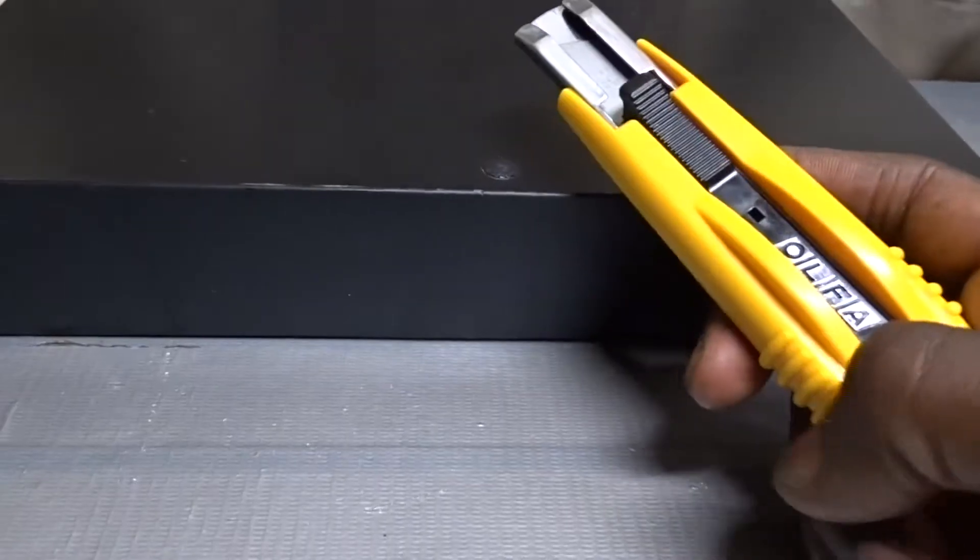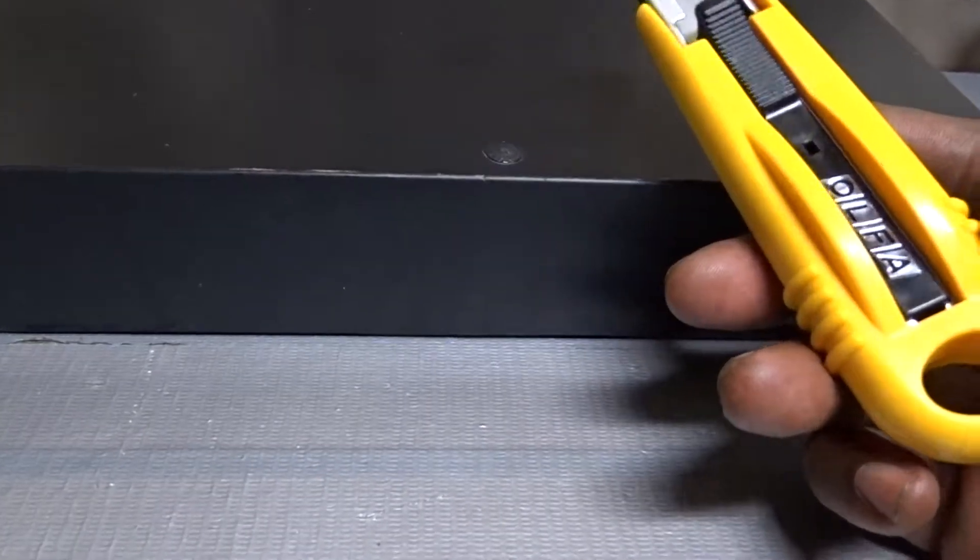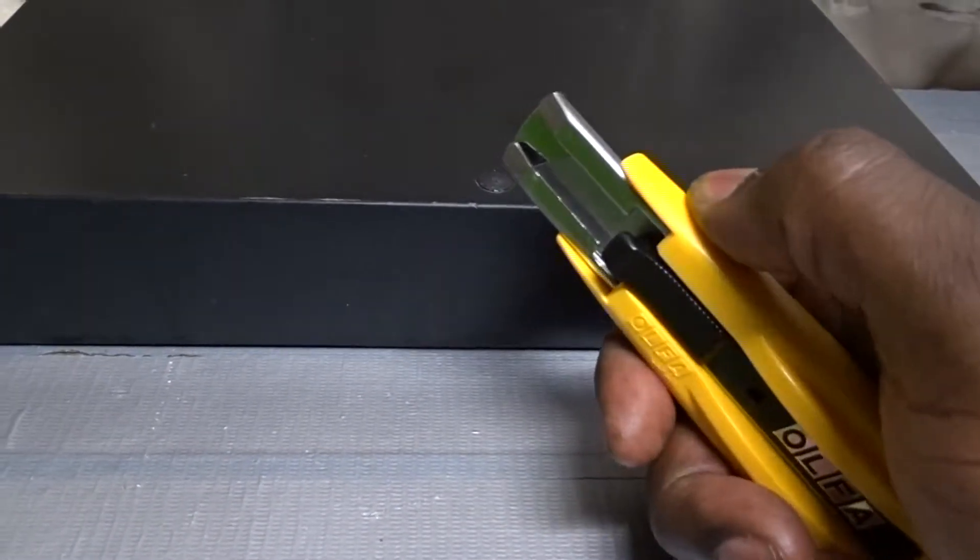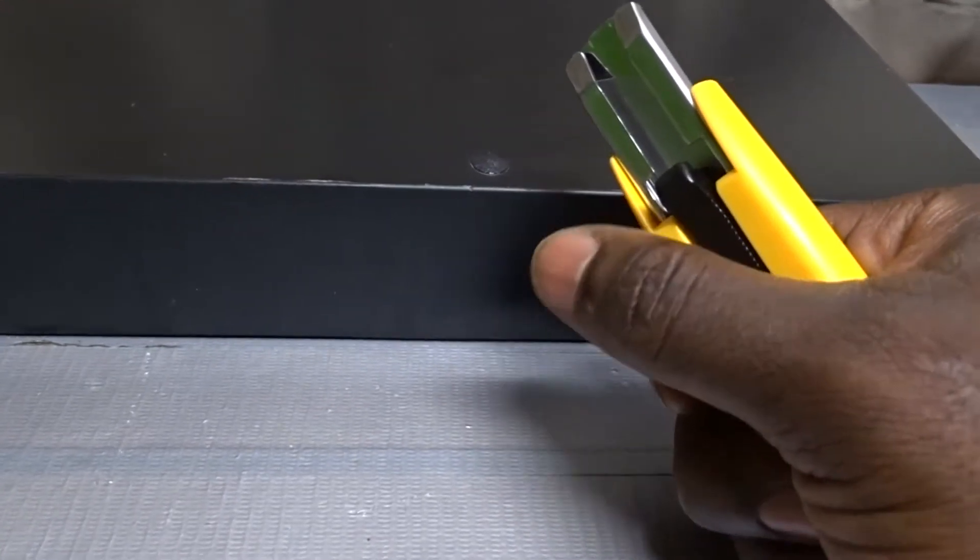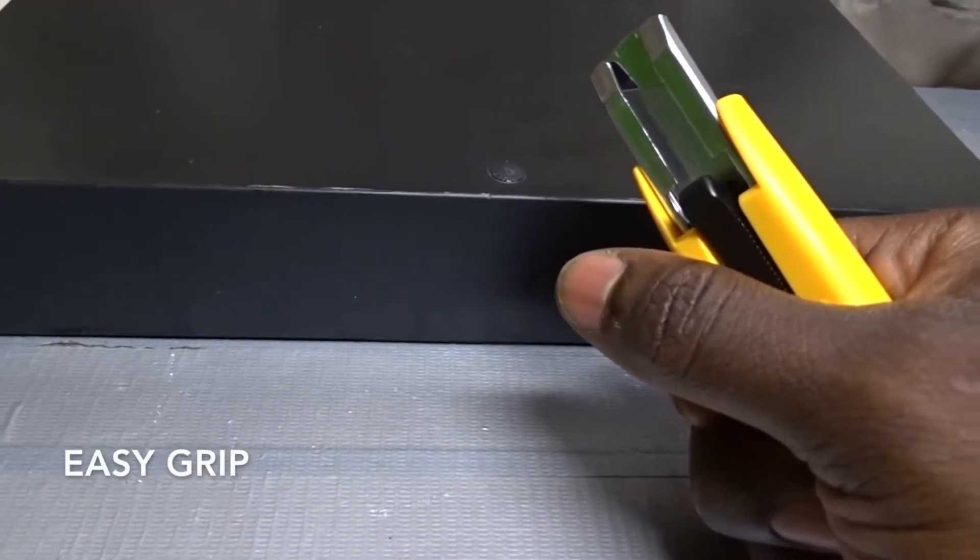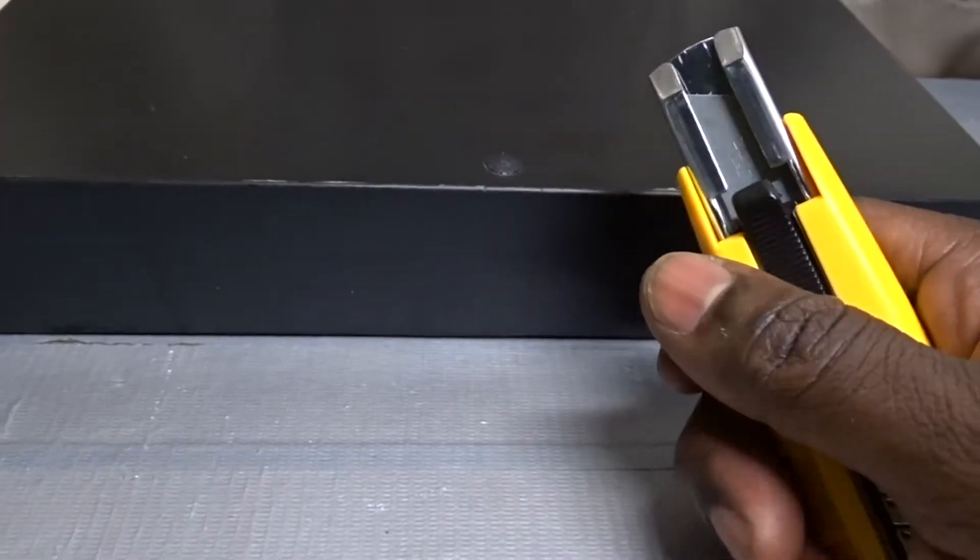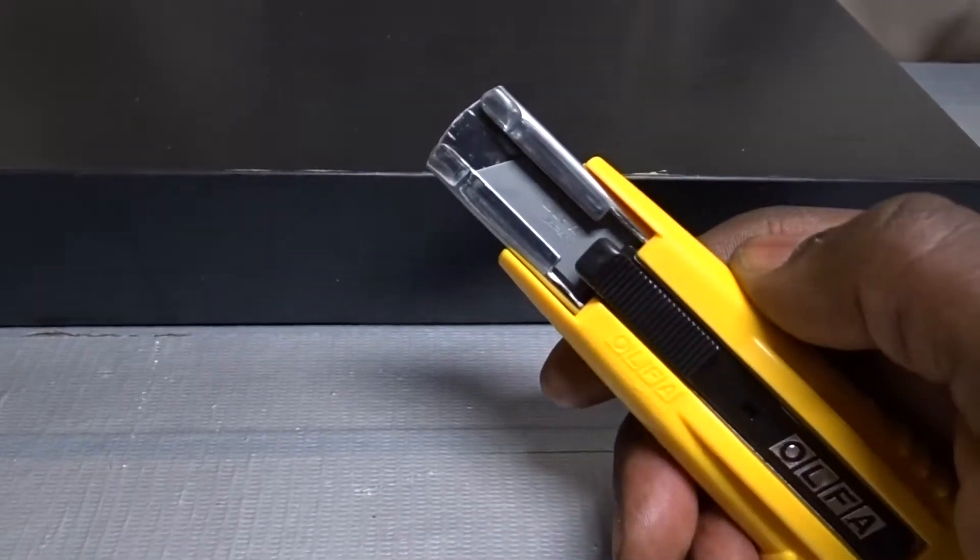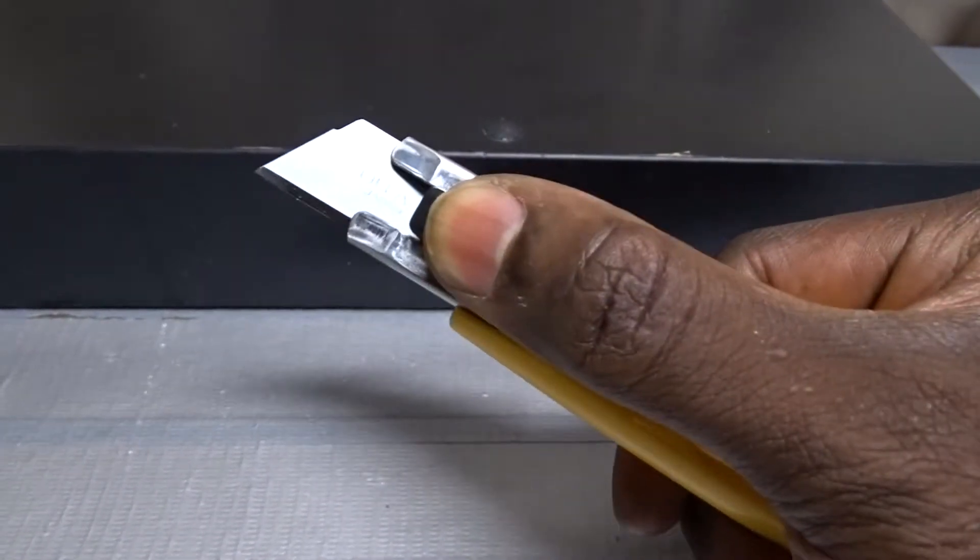On the edges here are grips that make it so if you really want to get into what you're cutting, you can grab it and grip it very easily without having any problem with the actual knife slipping. It has a retractable knife.